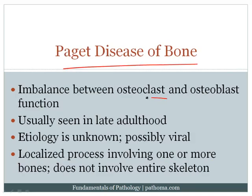Paget's disease of bone is an imbalance between osteoclast and osteoblast function. Normally, osteoblasts lay down bone and osteoclasts resorb bone in balance. The osteoblast manages the osteoclast — PTH hits the osteoblast (which has the PTH receptor), and the osteoblast then tells the osteoclast to resorb bone. The osteoclast does not act without permission of the osteoblast.